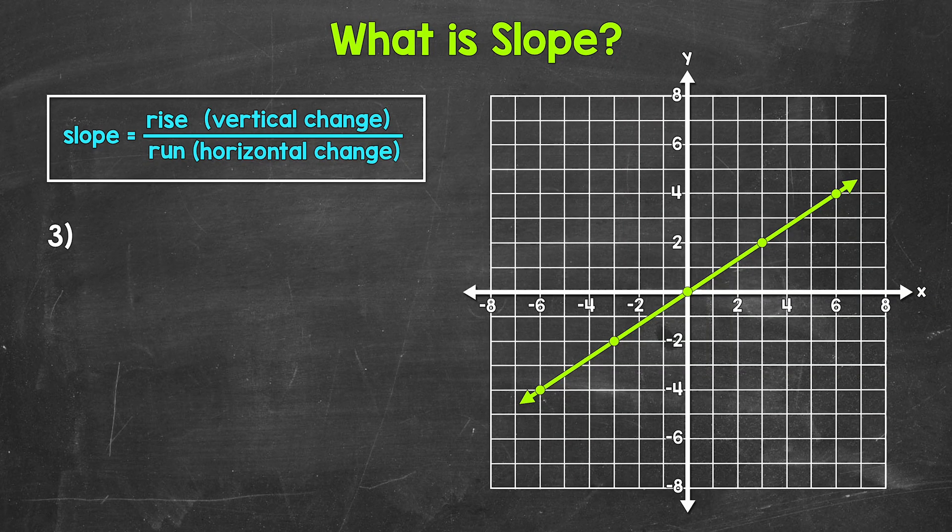Now let's take a look at number three where we have a line graphed on the coordinate plane. Looking at this line, you'll notice that this line is moving upward as it's moving from left to right. This is an example of what we call a positive slope. But what is the slope of this line and how do we figure this out? Well, that's where this box right here comes into play.